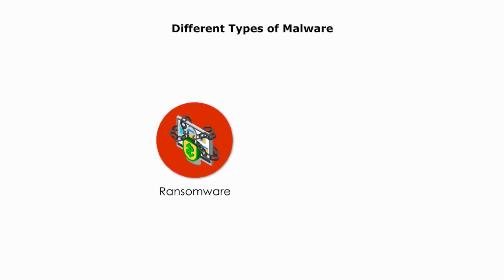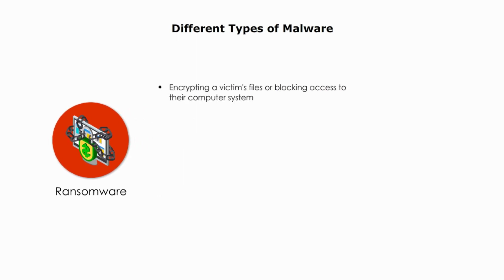Last but not least, ransomware. Ransomware is a type of malicious malware that encrypts the victim's files or blocks access to their computer system until a ransom is paid. The ransom demand usually comes with a threat that the files will be permanently deleted or the system will remain inaccessible if the ransom is not paid within a specified time. Ransomware is typically distributed through phishing emails, malicious attachments, or compromised websites.